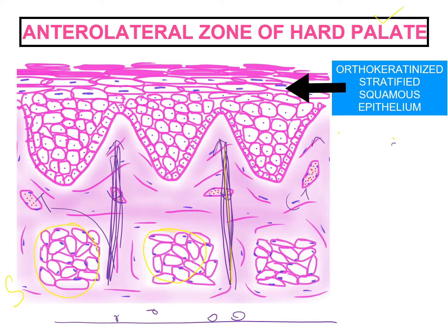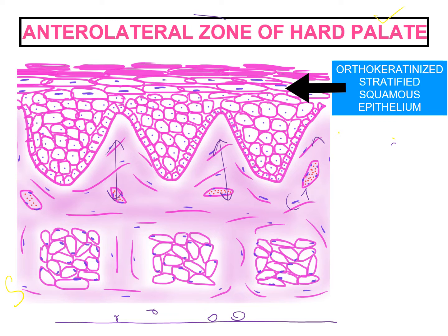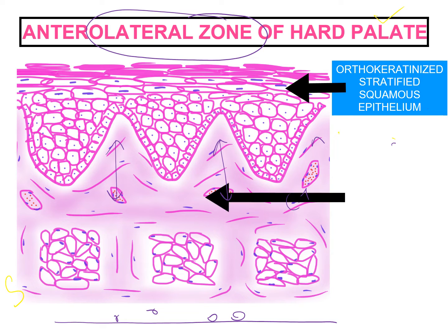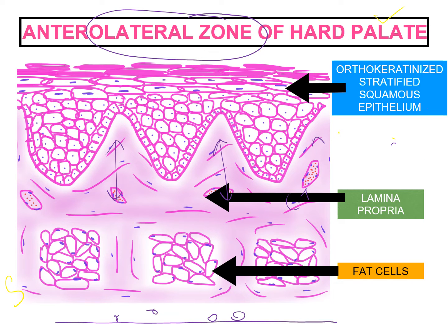In these spaces we can find fat cells or glands. In the histology of the hard palate, especially in the anterolateral zone, we can see orthokeratinized stratified squamous epithelium, lamina propria, and fat cells in the submucosa.